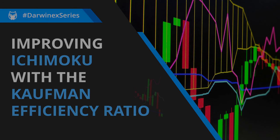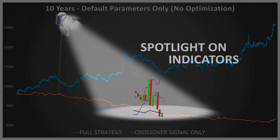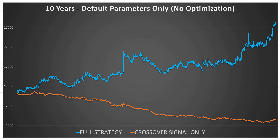This is the next episode in the Spotlight on Indicators series and in the last episode this is where we left off. The blue curve shows the equity that I've been able to achieve using this Ichimoku strategy. But bear in mind that there has been no optimisation of any of the parameters up until this point, and I have no doubt that this could be improved on significantly if an optimisation was performed in a sensible way, ensuring that no overfitting was taking place.